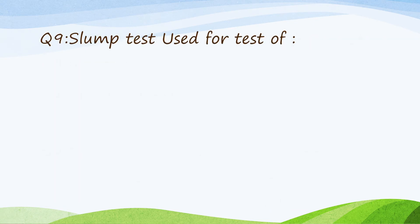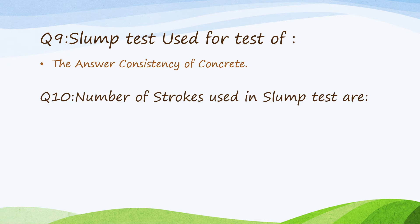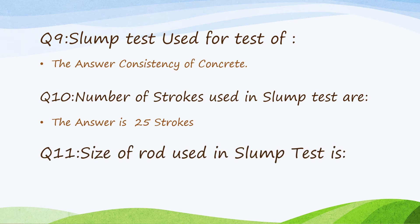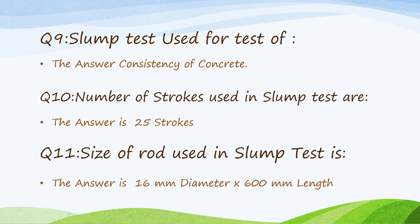Question nine: The slump test is used to test the consistency of concrete. Question ten: Number of strokes used in the slump test are 25 strokes. Question eleven: Size of rod used in the slump test is 16 millimeter diameter by 600 millimeter length.